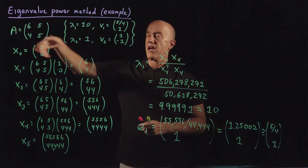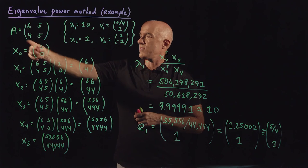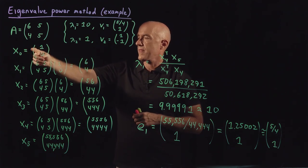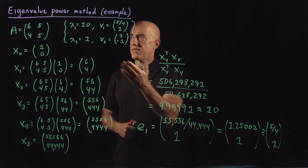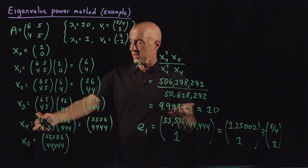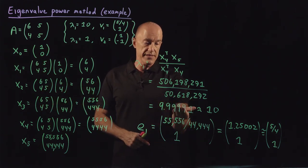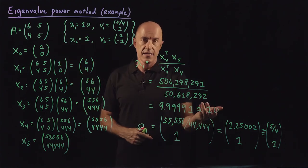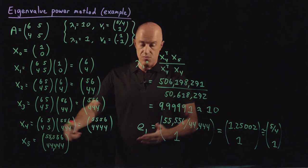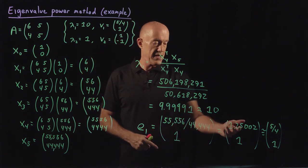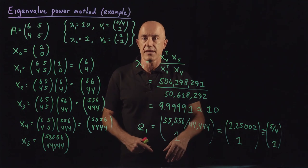To summarize: this is a baby example showing how the power method works. We start with some arbitrary initial vector and repeatedly multiply by A. After only 5 multiplications we're already at 9.99991, which is a good approximation to 10. The eigenvector is just x5 normalized so that we have a 1 in the second component, giving us approximately [1.25, 1] — which is 5/4 and 1.